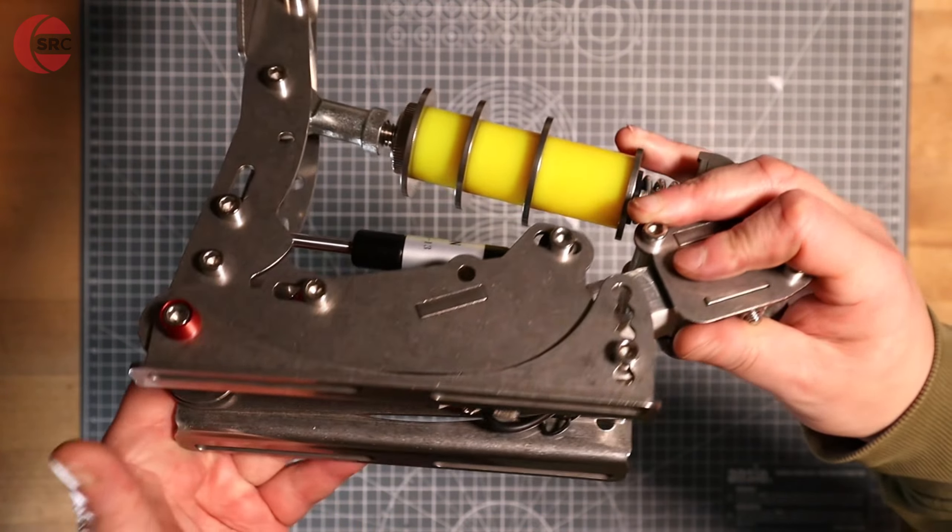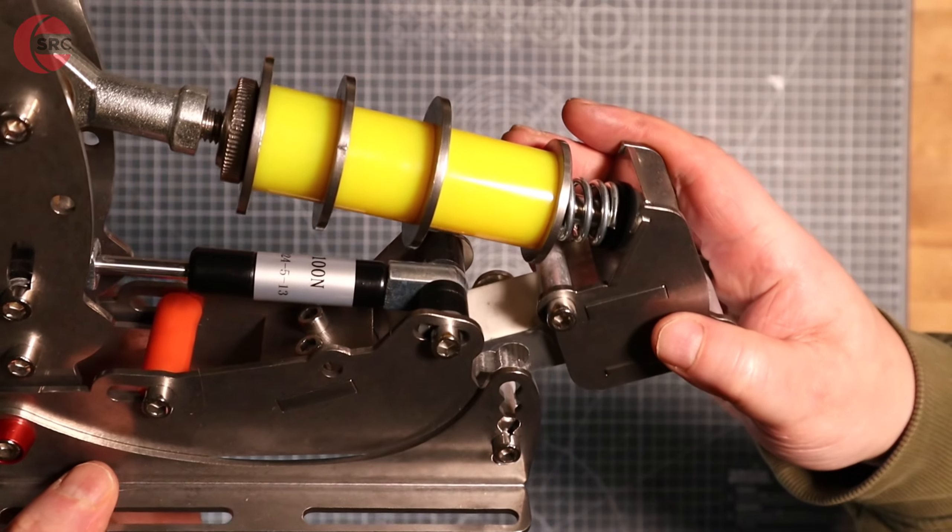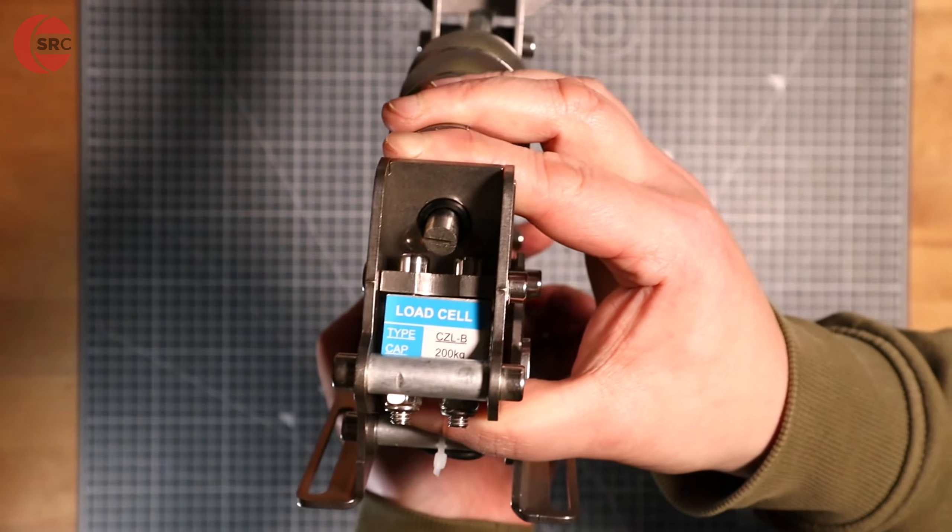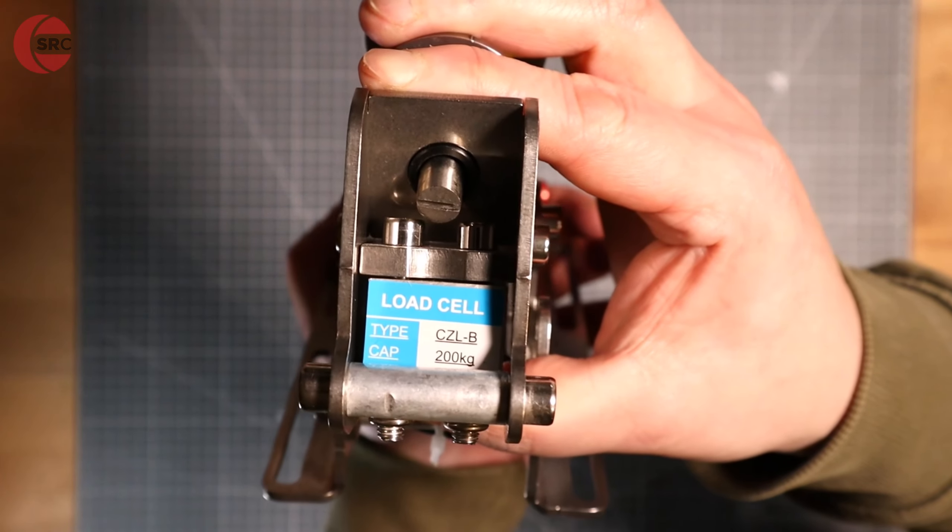The brake pedal is a more chunky design carrying a 200 kilogram load cell, gas damper, a fixed set of stacked elastomers and topped off with a short metal preload spring.